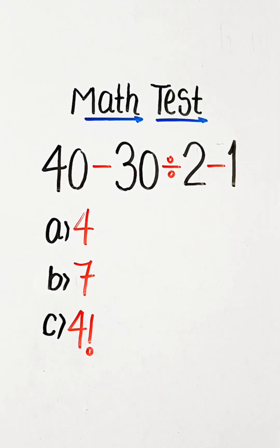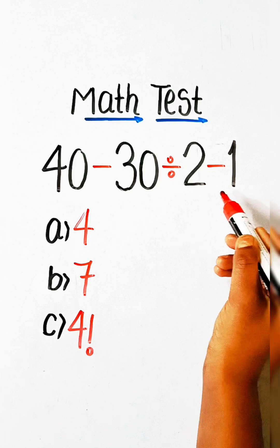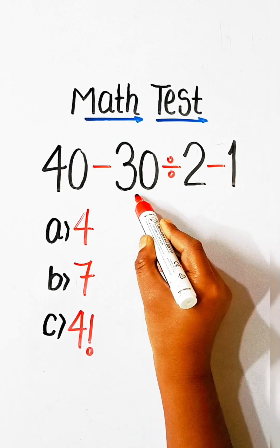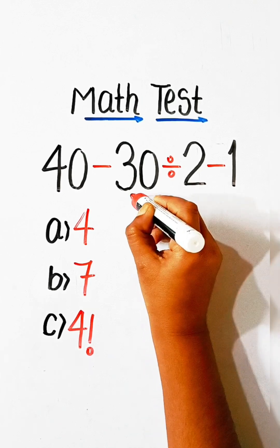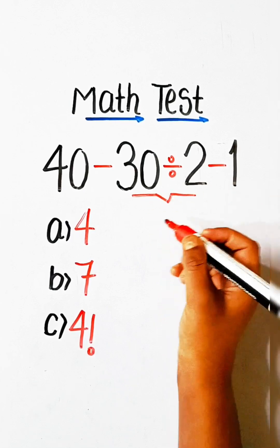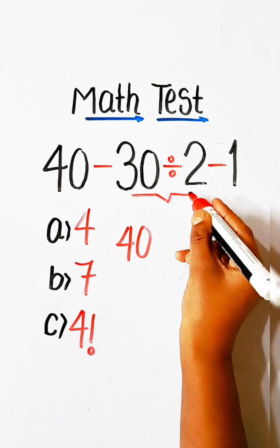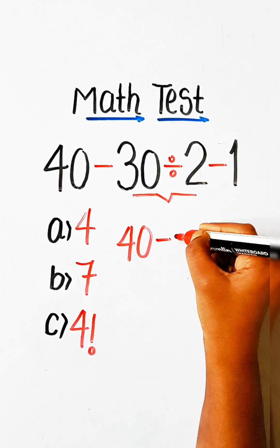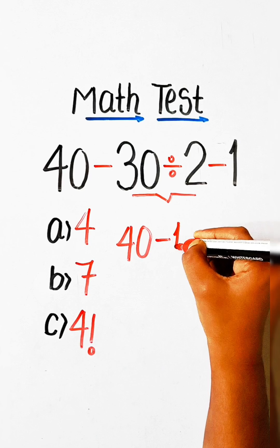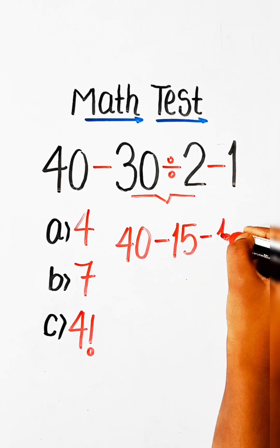Now it's time to solve this math expression. Division comes first, so we can write 40 minus, 30 divided by 2 is 15, minus 1.